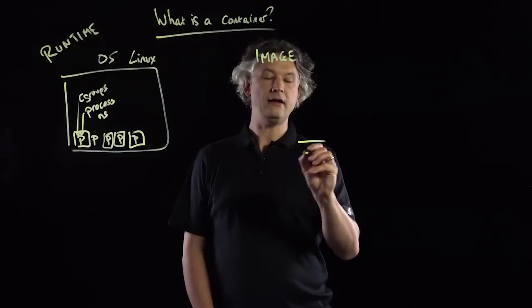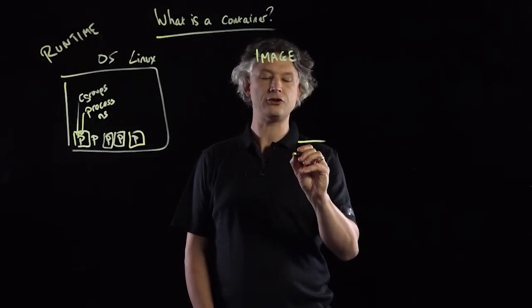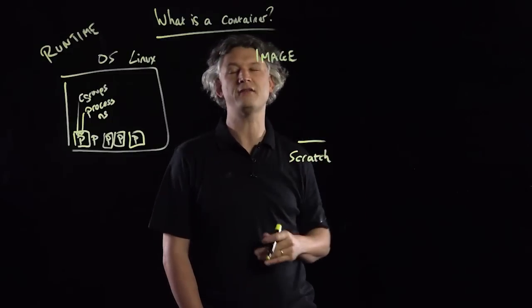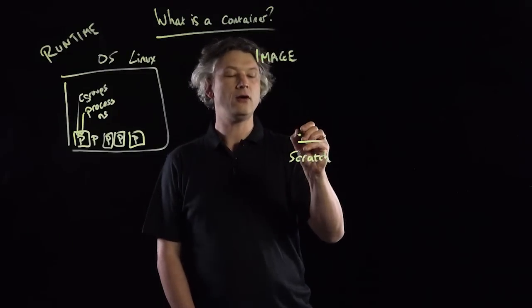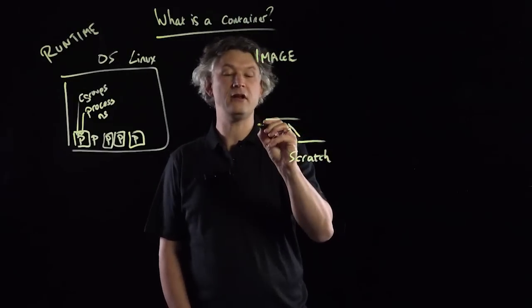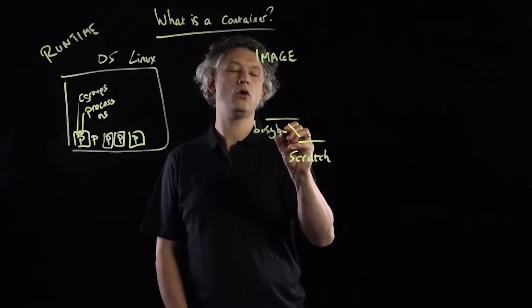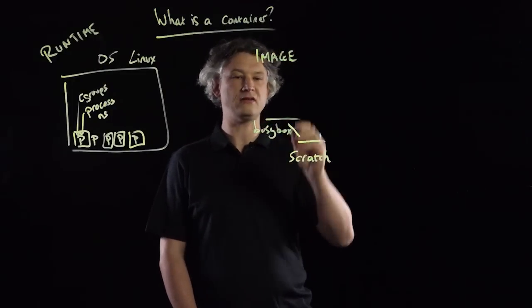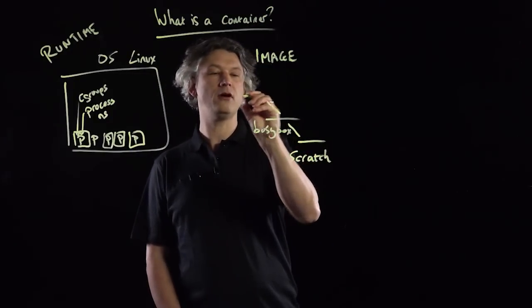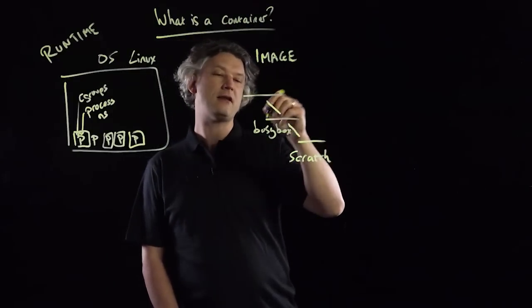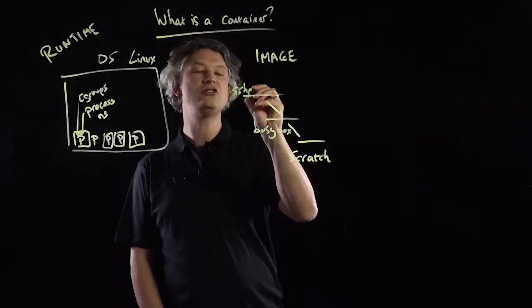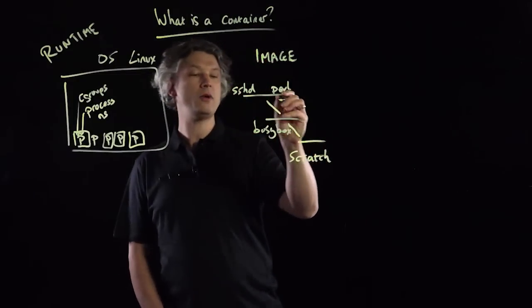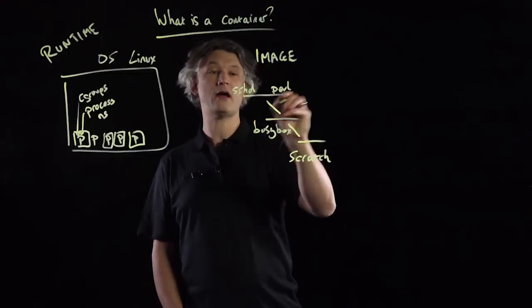Let me explain image layering. If we start at the root of this parent-child tree, we have an image called Scratch. The Scratch image is basically a completely empty, formatted file system — it's basically nothing. On top of Scratch, we might have the basics of an operating system, something like BusyBox, or Debian, or whatever — some image built off of Scratch that is just the bare bones of an OS. Then that image can be the parent of another image, and let's say we add SSHD and Perl into that child image.